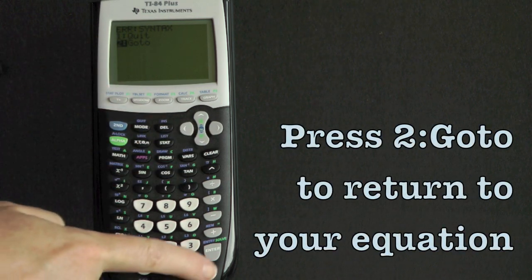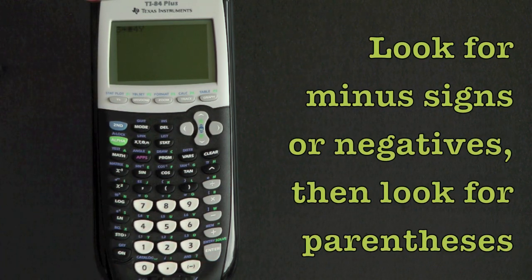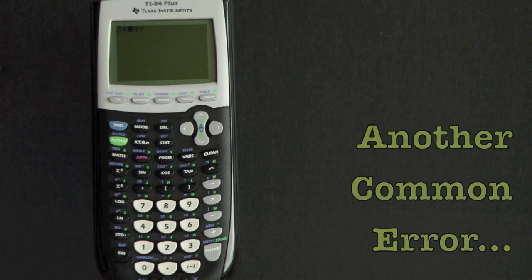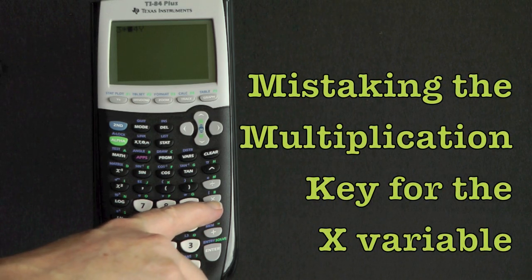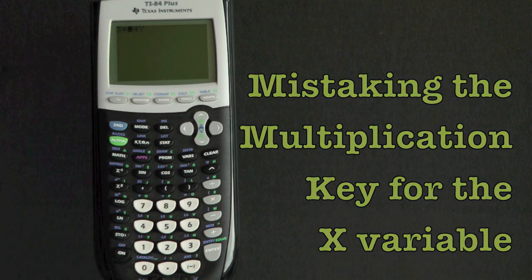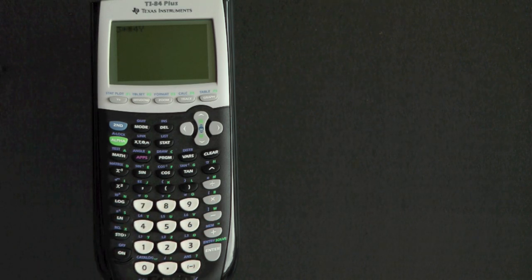Again, we have a new syntax error. So we press Go To and look for minus signs, but there are none. And we look for parentheses, but there's also none of those. So we look at another common error, mistaking the blue multiplication key for an x variable.